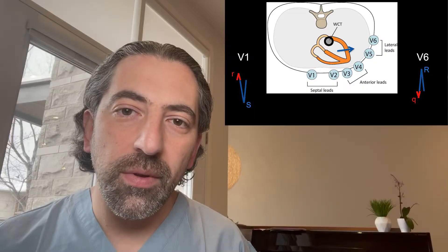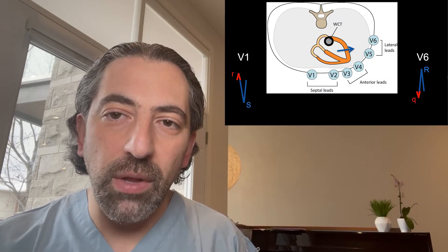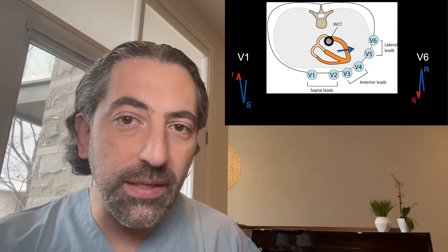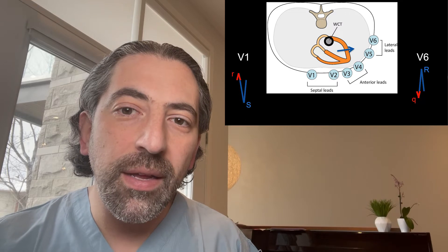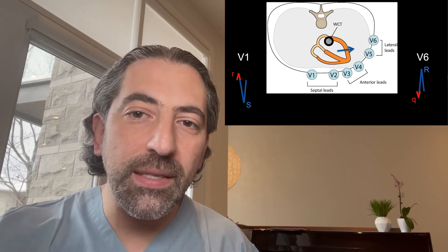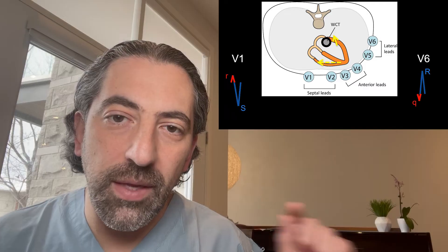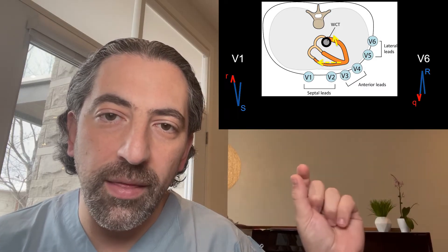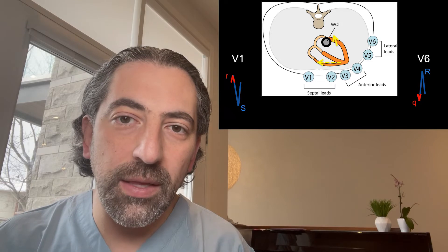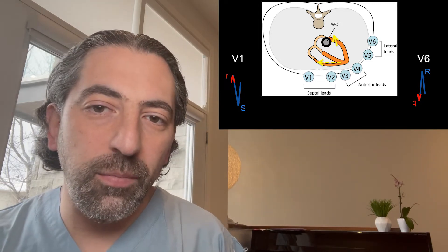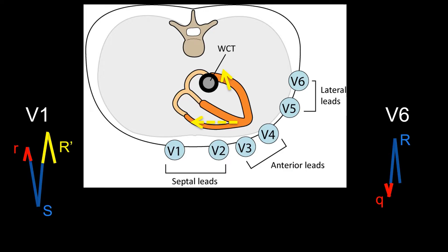This is where things start to change. Because the right bundle branch is blocked, depolarization of the right ventricle does not occur through the His-Purkinje system anymore. Rather, it occurs through slow myocyte-to-myocyte muscle conduction, which leads to a delayed vector of depolarization from left to right. And even though there is some depolarization going the opposite way in the basal aspect of the left ventricle, the slow conduction through the right ventricle produces a larger vector of depolarization.